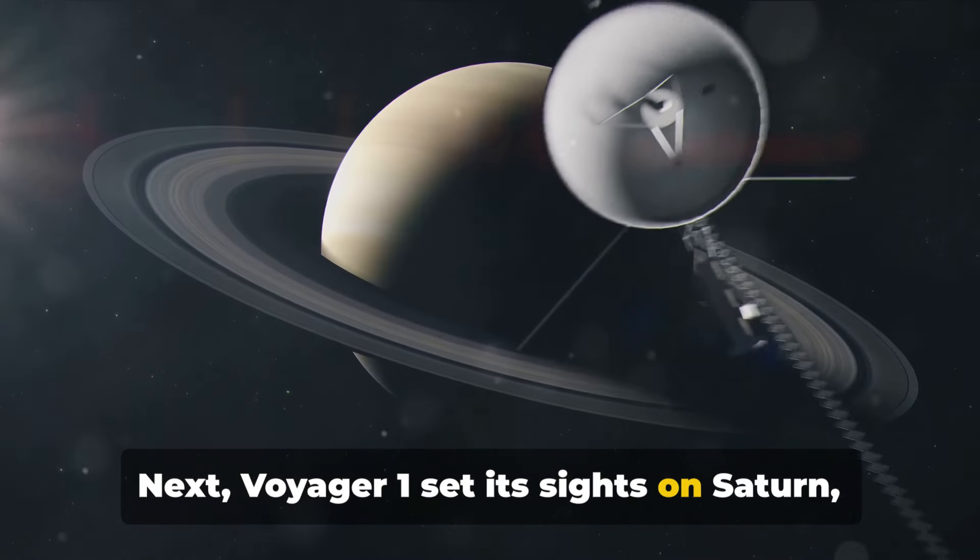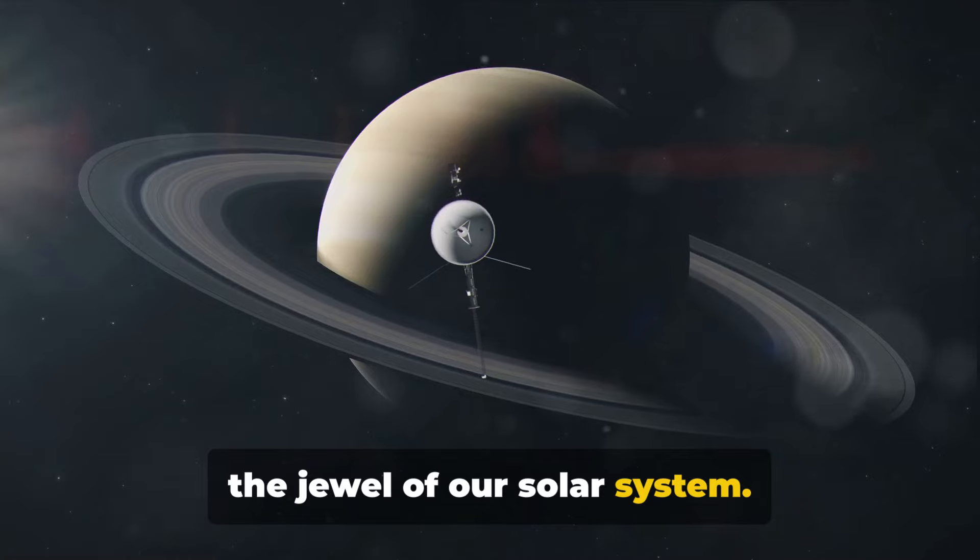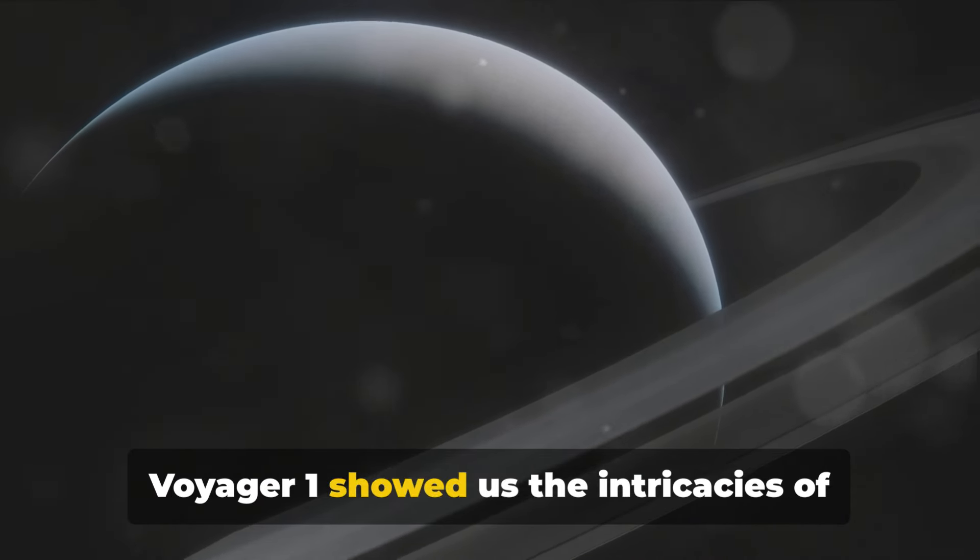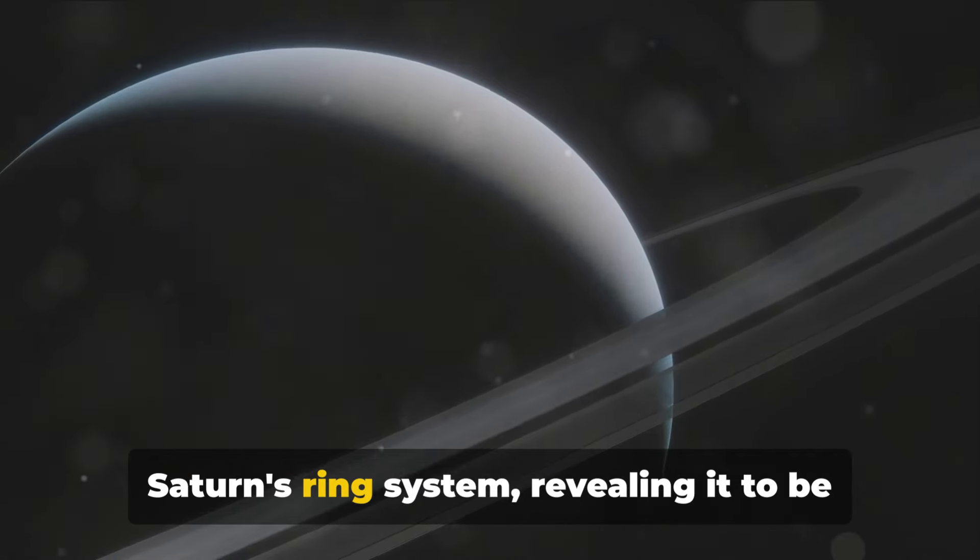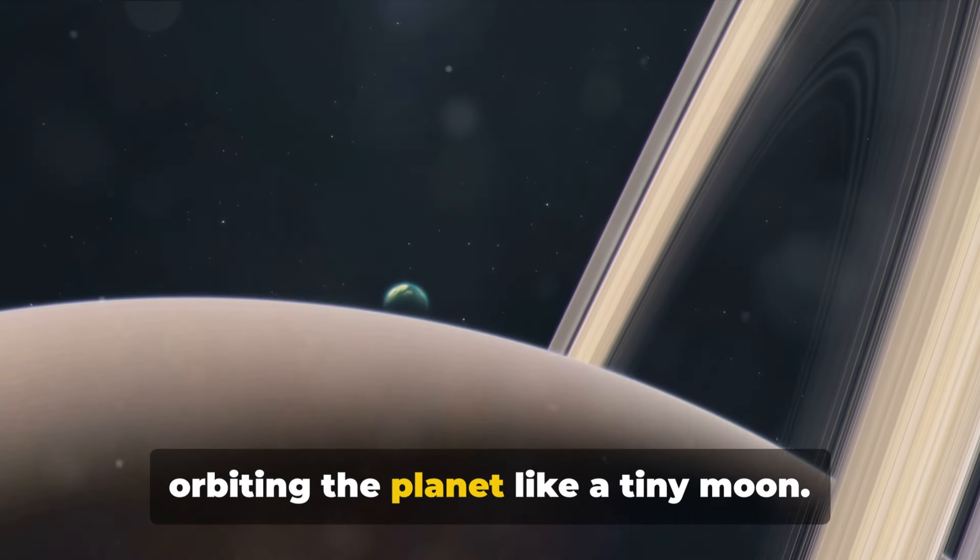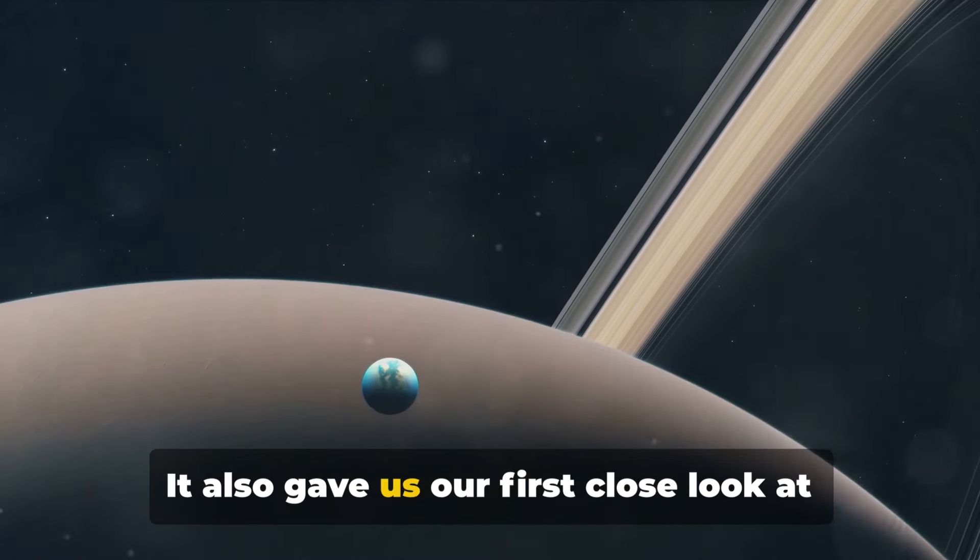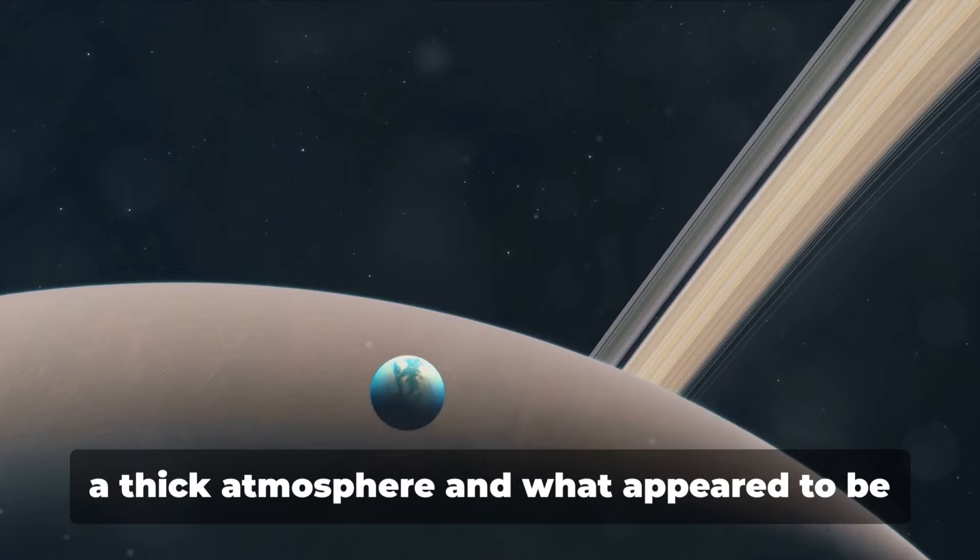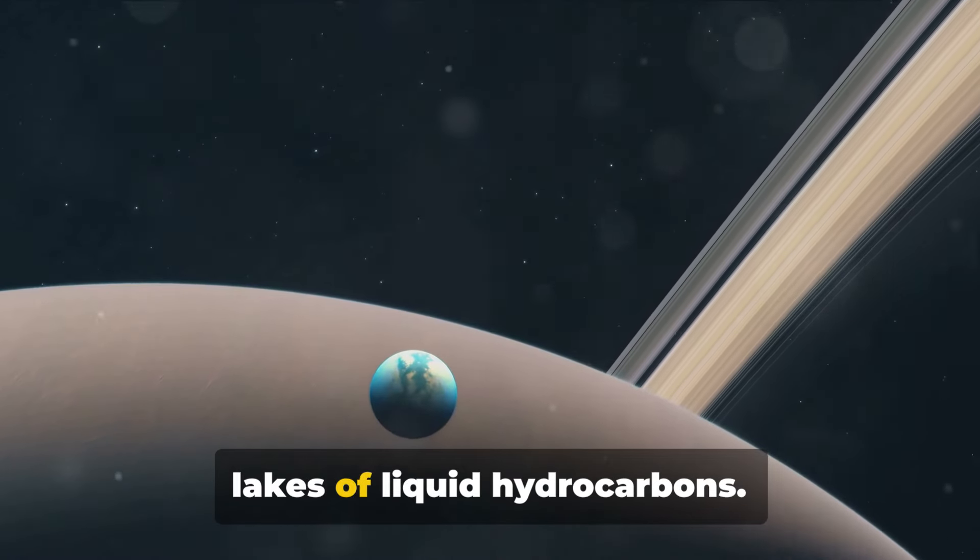Next, Voyager 1 set its sights on Saturn, the jewel of our solar system. The encounter with Saturn was equally enlightening. Voyager 1 showed us the intricacies of Saturn's ring system, revealing it to be composed of countless ice particles, each orbiting the planet like a tiny moon. It also gave us our first close look at Saturn's largest moon, Titan, a world with a thick atmosphere and what appeared to be lakes of liquid hydrocarbons.